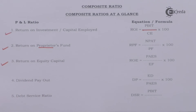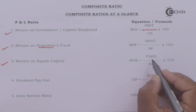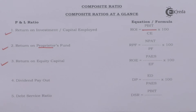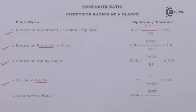Return on equity capital is calculated as net profit after tax minus preference dividend, divided by equity shareholders' fund multiplied by 100. Equity shareholders' fund means equity share capital plus reserves and surplus minus fictitious assets. The dividend payout ratio shows the relationship between equity shareholders' total earnings and the dividend paid by the company. Its formula is equity dividend divided by profit available to equity shareholders multiplied by 100.